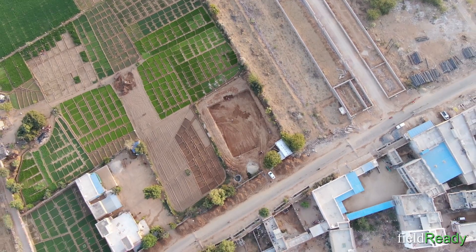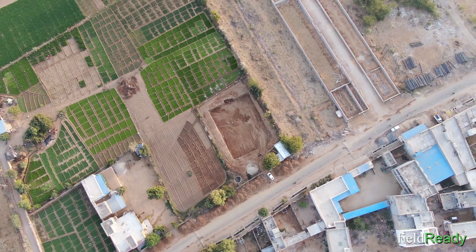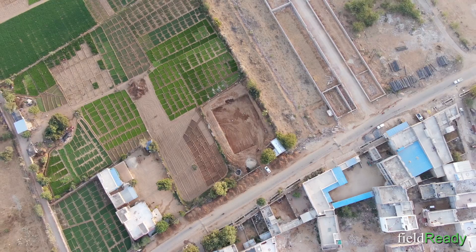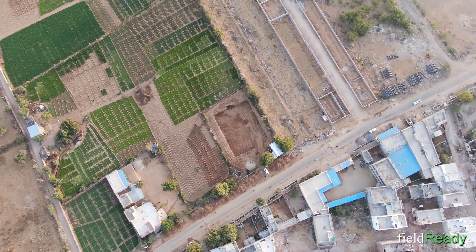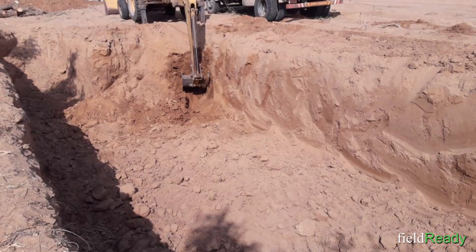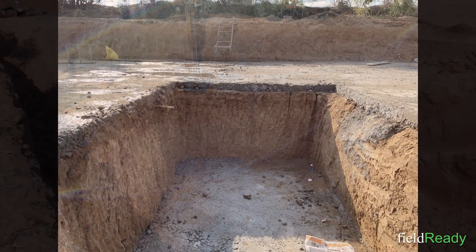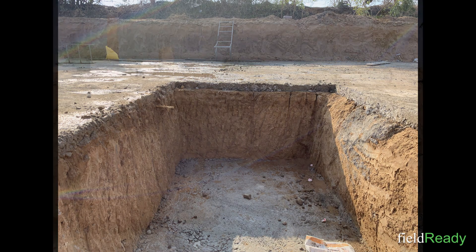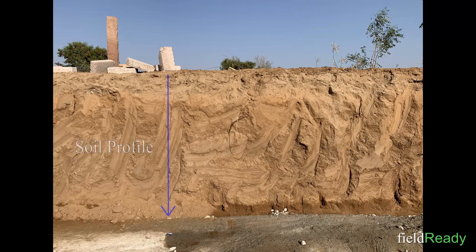The first thing I look for in a land is its soil strata. As you can see, in the past this land was used for agriculture purposes, so I gave an excavation order till the lift pit level. It is always a good practice to know the soil strength in advance. Looking at this vertical profile of soil, we can confirm the absence of hard strata underneath the land. Looking at this strata, I was expecting a low SBC value.